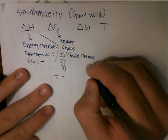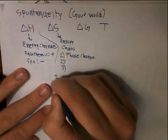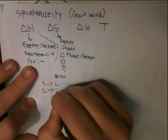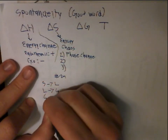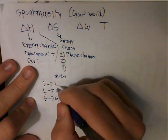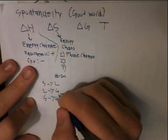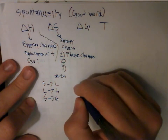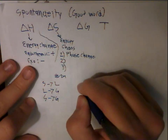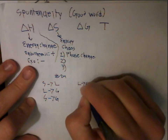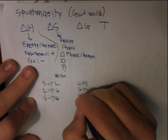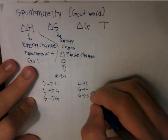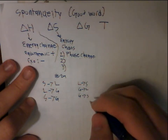There are different ways that states of matter can change. Solid to liquid is melting, liquid to gas is boiling, solid to gas is sublimation. The opposites are: liquid to solid is freezing, gas to liquid is condensation, gas to solid is deposition.